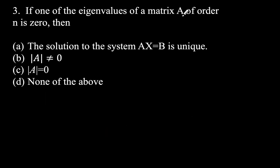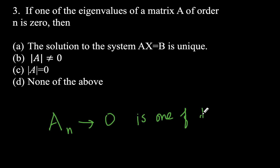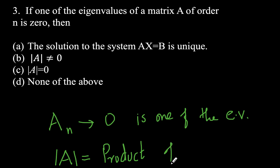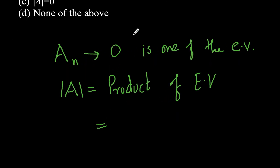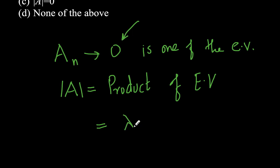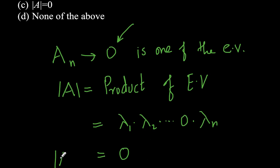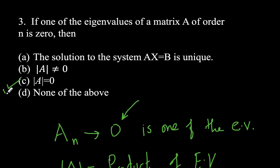Next question: if one of the eigenvalues of a matrix A of order n is 0, which of the four options is correct? We know the determinant of A equals the product of its eigenvalues. Since 0 is one of the eigenvalues, multiplying 0 by any other eigenvalues gives 0. Therefore, the determinant of A is 0, so option C is correct.